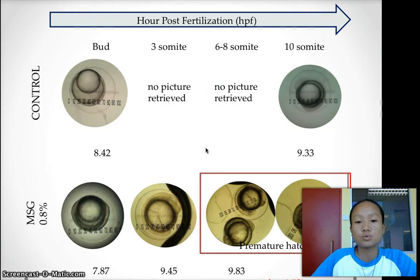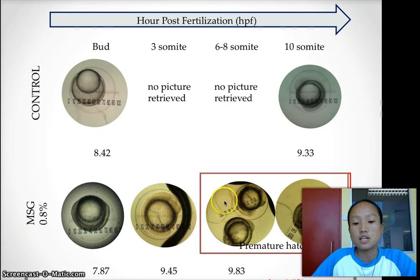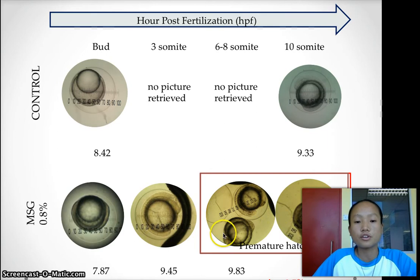When it comes to around 3 to 6 somites, we observe many premature hatching cases for the fish eggs. In this picture, we can see the premature hatched fish embryos — this is the chorion, this is the premature hatched fish embryo, and this is the normal fish embryo. So we decided to lower our concentration of MSG to continue our research.